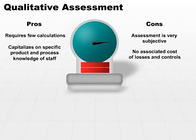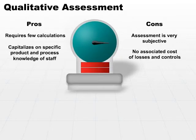Also, there's no associated cost of losses and controls. One thing that you lose in a purely qualitative risk assessment is the ability to say, I'm going to lose $100,000 if this risk occurs, and it's going to cost me $20,000 to control it. You have to be a little careful about not spending more than you're actually getting back.